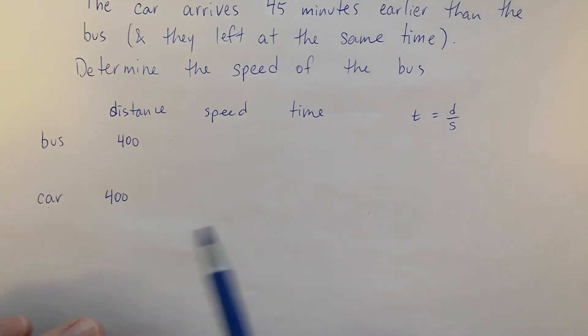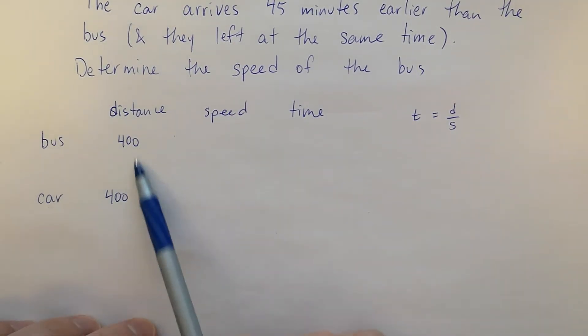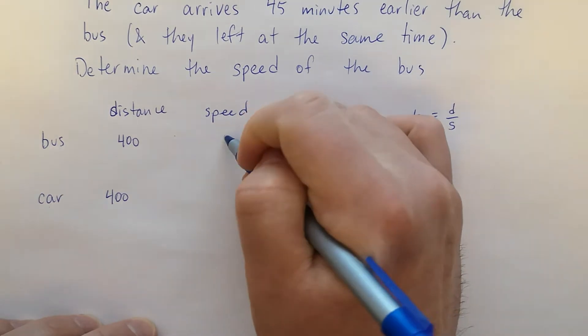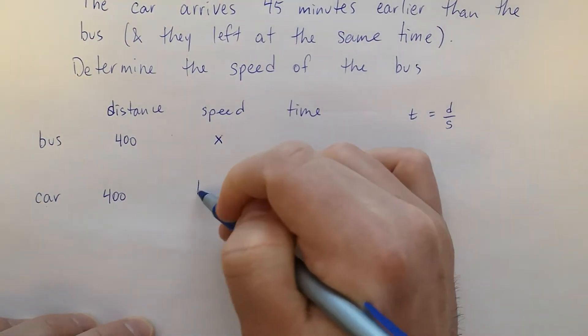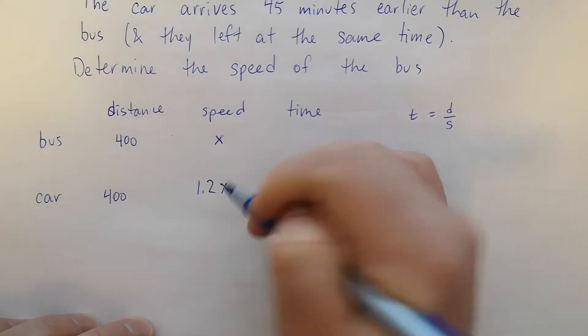Alright, let's check this out. So the bus and the car, they both travel 400 kilometers. The bus's speed is what we're looking for. We're going to call that x. And the car is 1.2 times greater than that, so it's 1.2 times x.